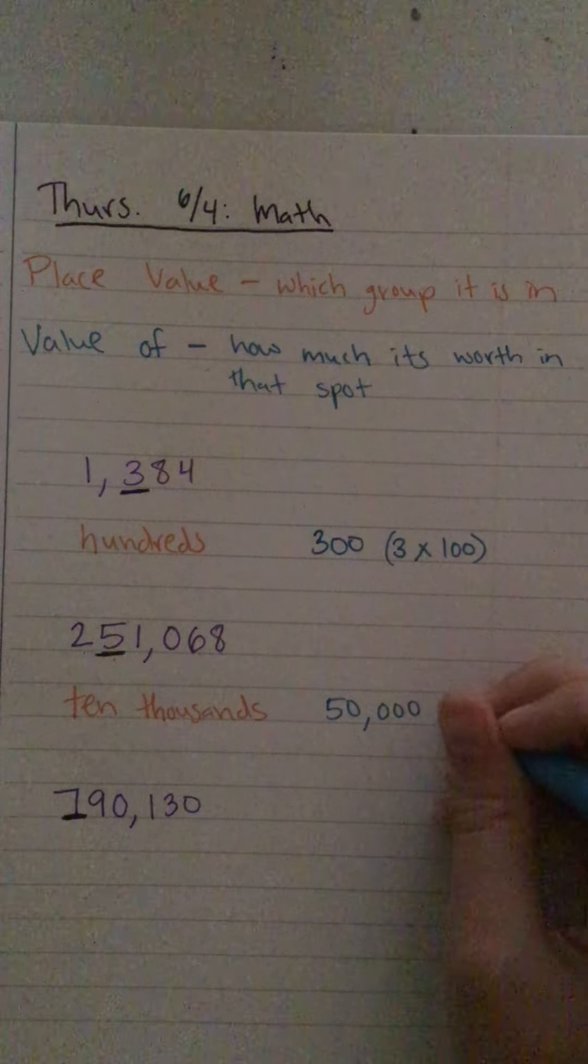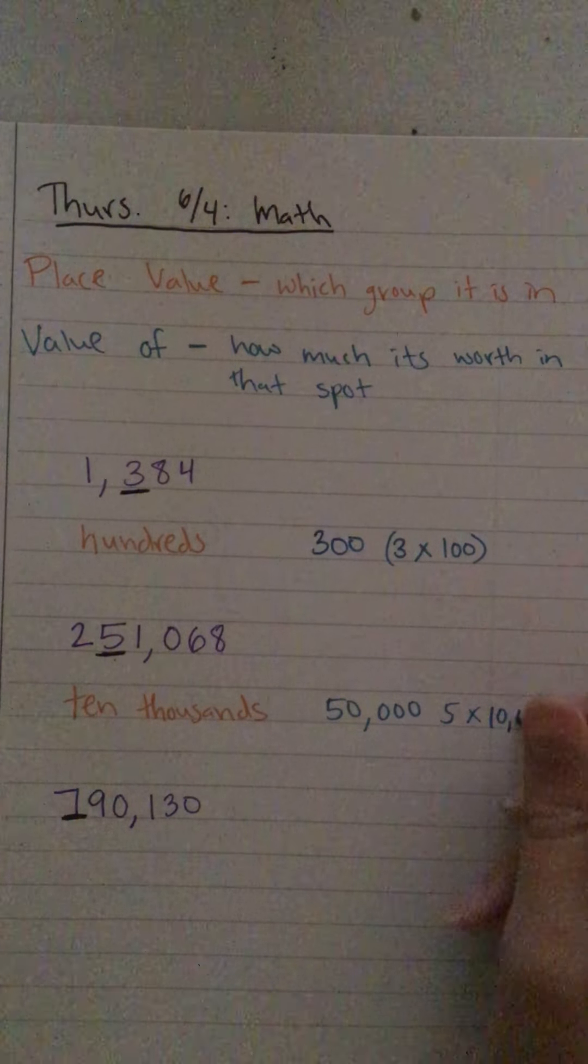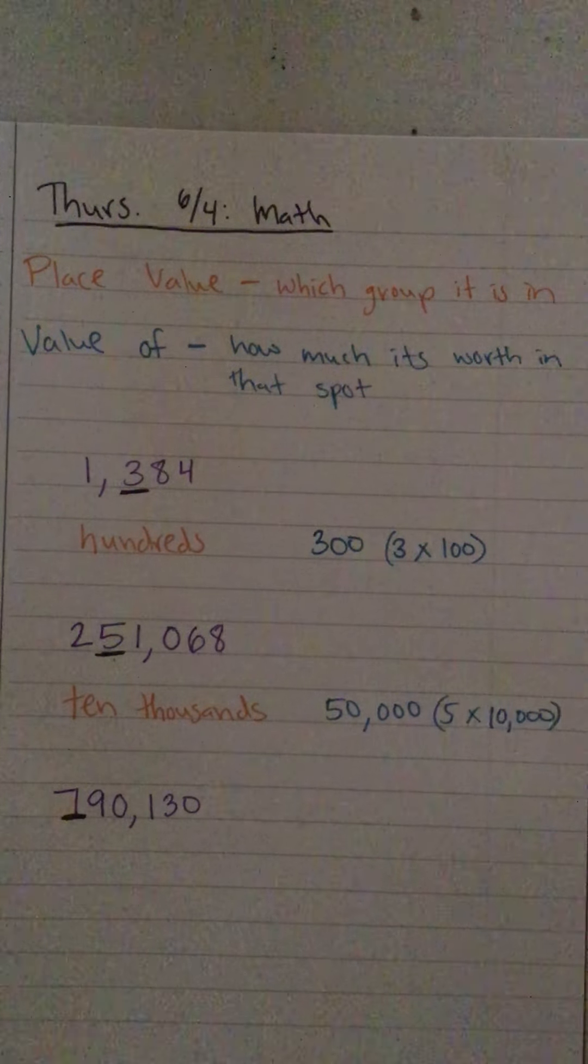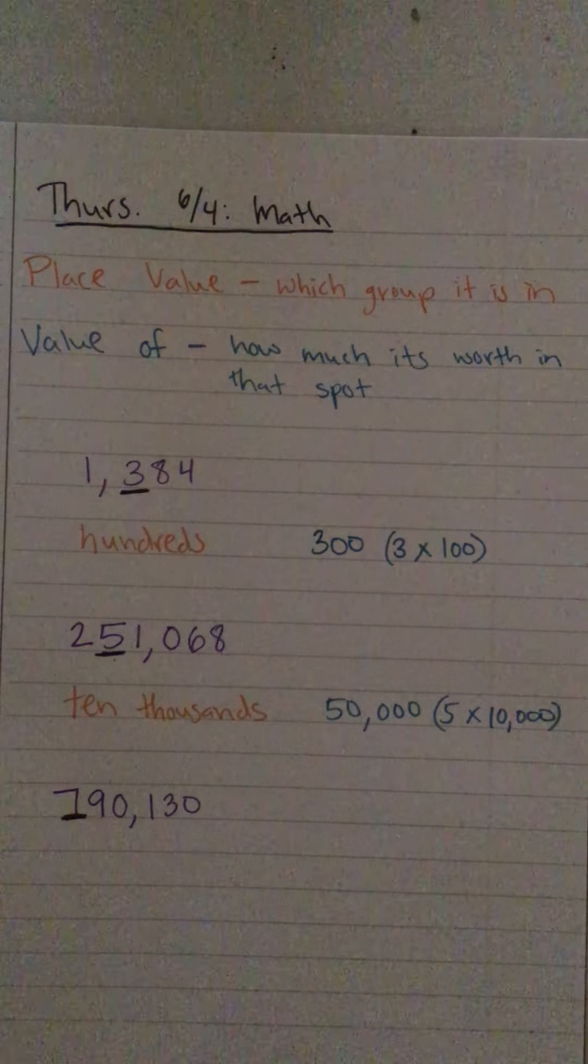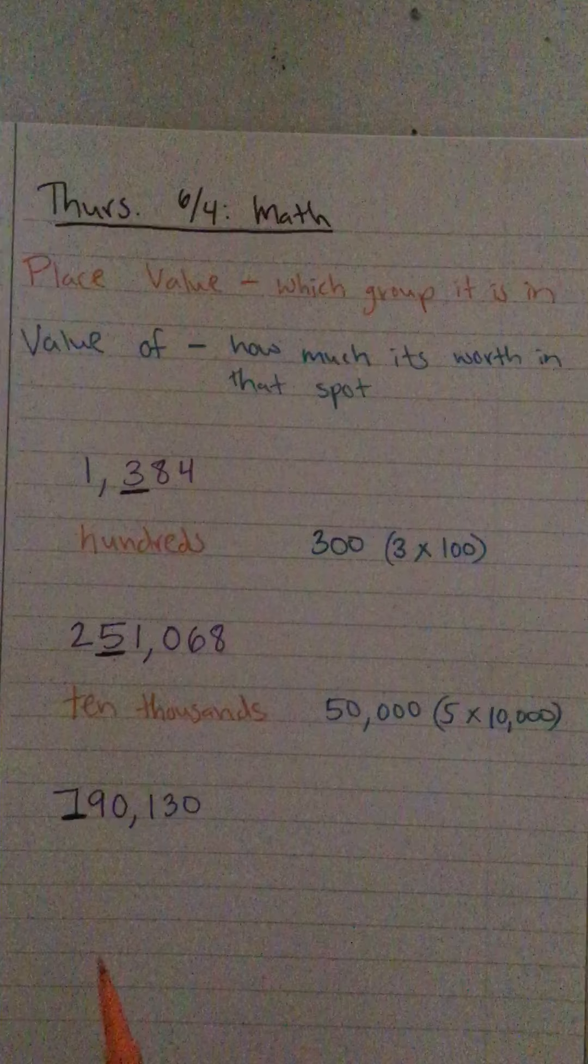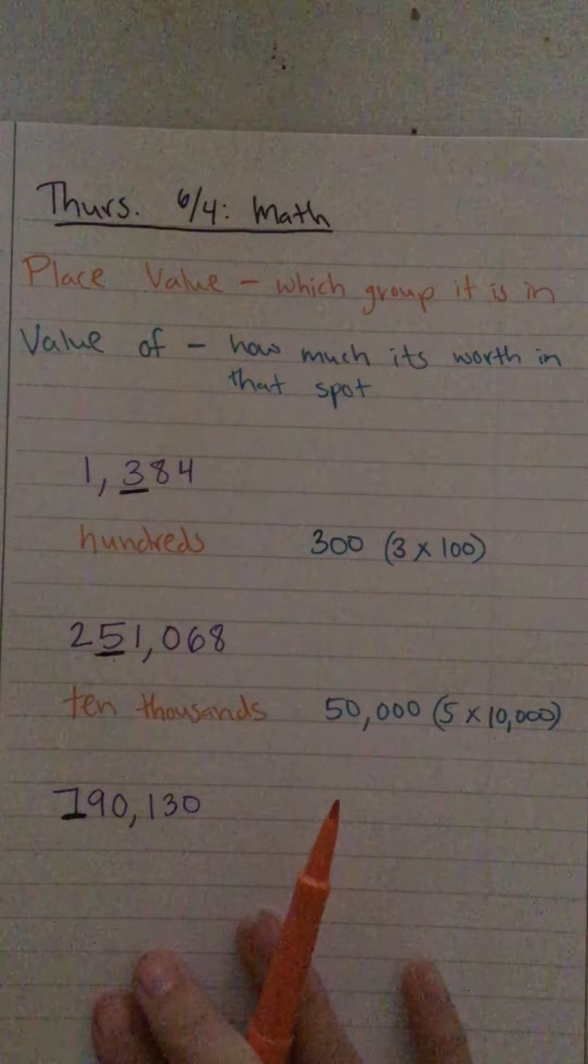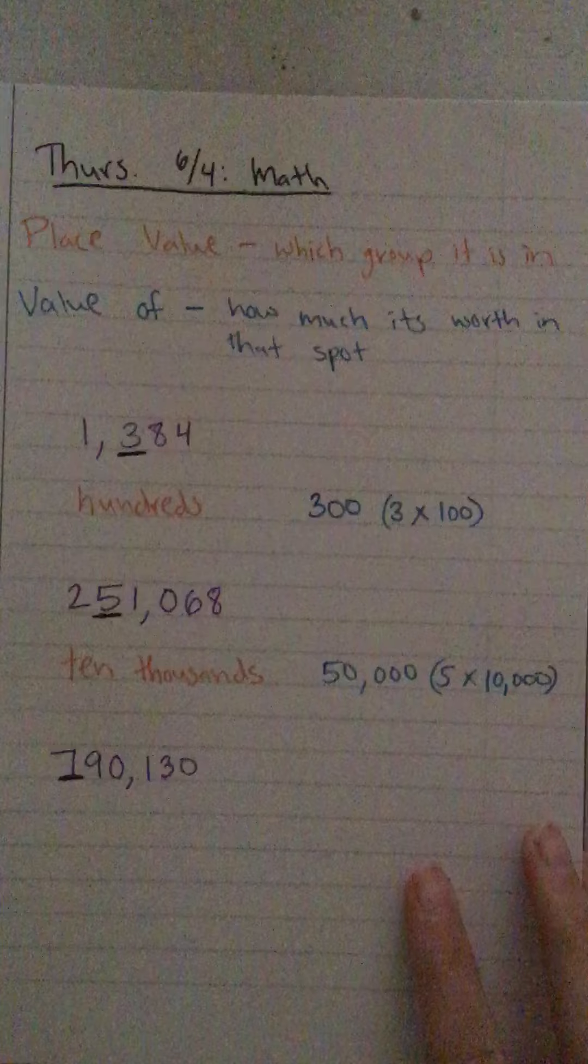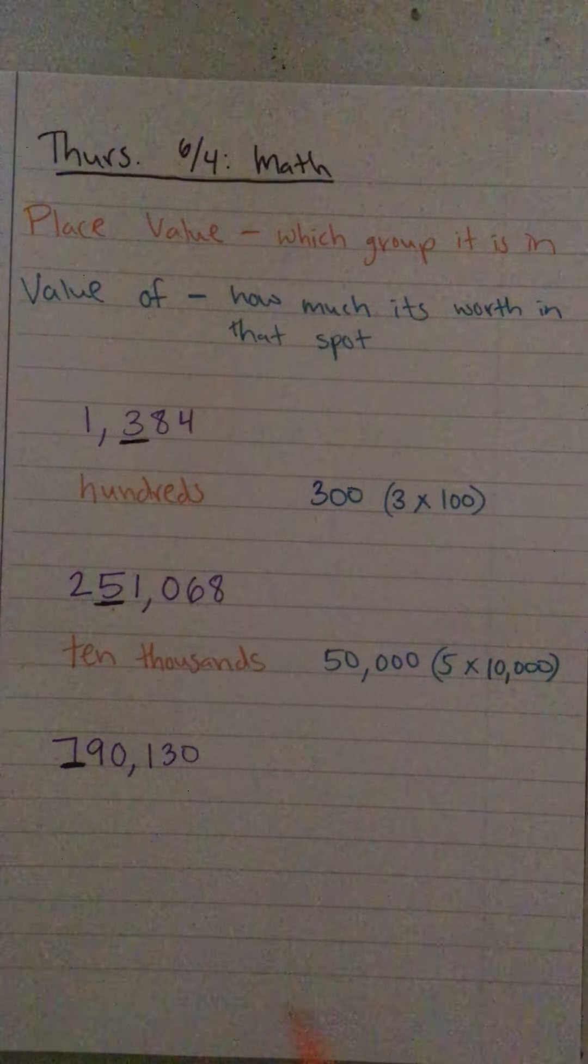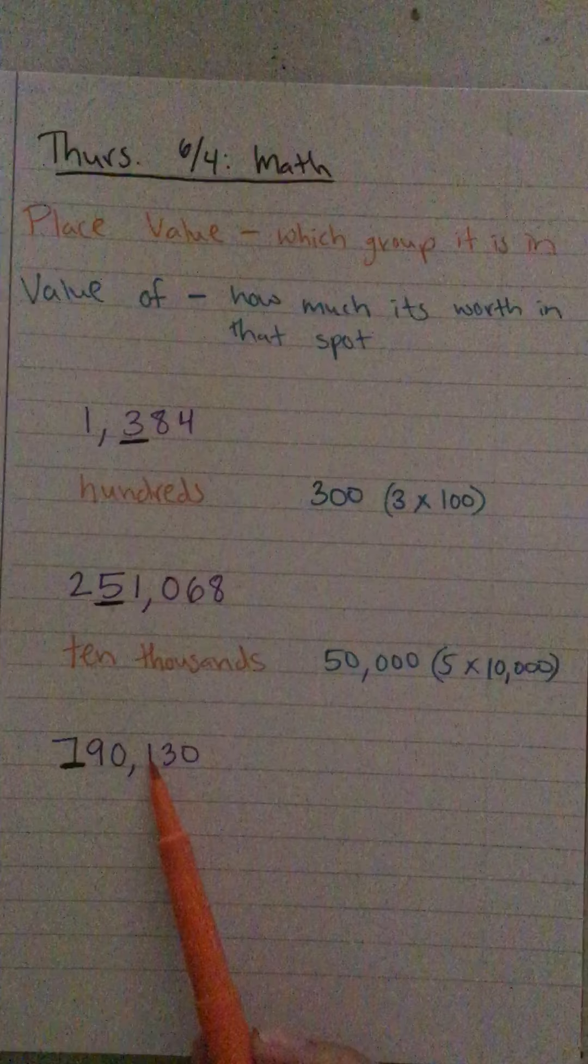Okay, last one: seven hundred ninety thousand one hundred thirty. This one's gonna be a big one. I underline that seven, so the place value of that seven - we've got ones, tens, hundreds, there's our comma, so thousands, ten thousands, hundred thousands.